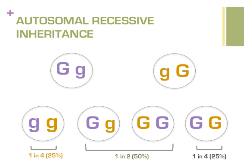Two parents who are carriers of the same condition may have three children together that are all affected with the recessive condition, or they may have four children together and none of them have the condition.